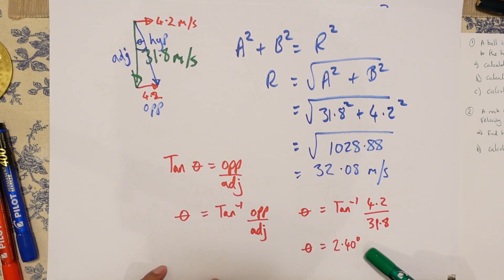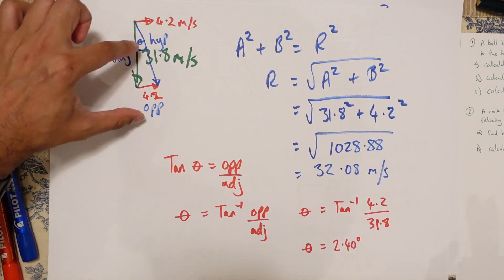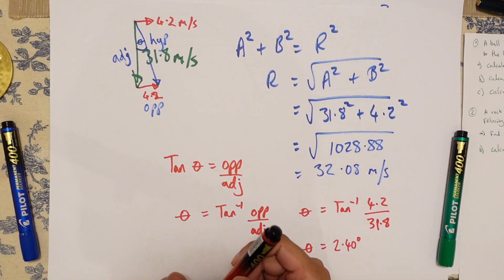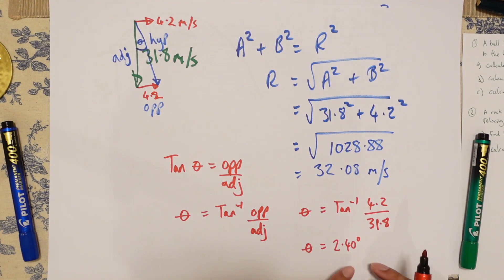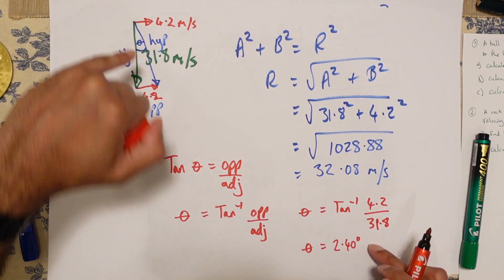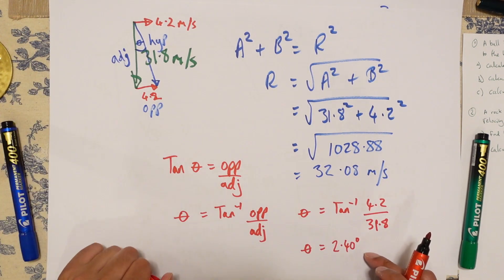Now, bear in mind, this angle is this angle over here. You could also work out this angle over here, if you wanted to. And it will give you a slightly different thing. So it's always important to have an angle showing exactly what you have done.